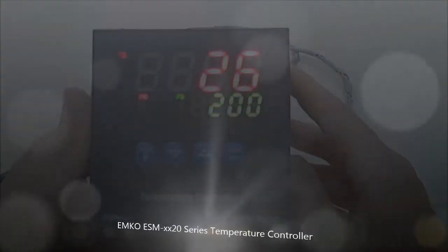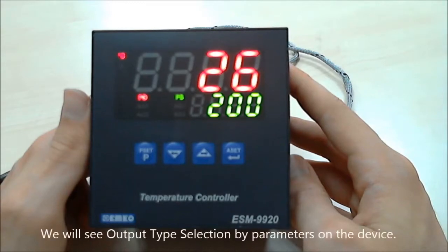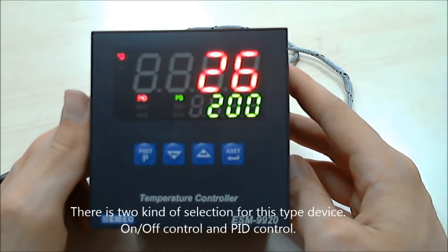This is Emco ECM20 series temperature controller. We will see output type selection now by this device. There are two kinds of selection: the first one is on-off control and the second one is PID control.